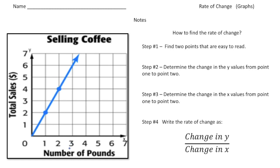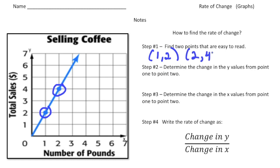To find the rate of change of this linear graph, I created a four-step process. Step one: find two points that are easy to read. Here we have a point right here and also a point right here, and those points are pretty clear about where they stand on the coordinate grid. This location is X equals one and Y equals two, so I'll write down one and two. The second point is two and four. One is the first X value, two is the second X value, and two and four are the first and second Y values.